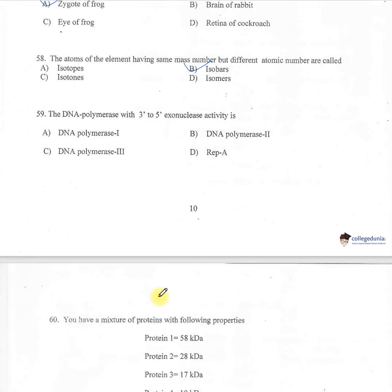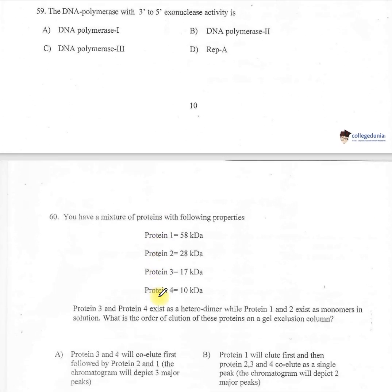Question 59: The DNA polymerase with 3' to 5' exonuclease activity is — A: DNA polymerase I, B: DNA polymerase II, C: DNA polymerase III, D: Rep A. The correct one is option A — DNA polymerase I.